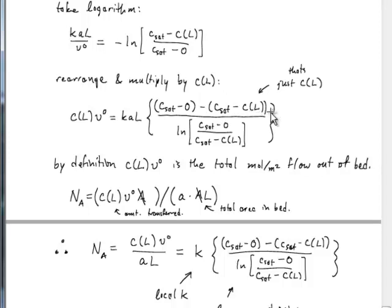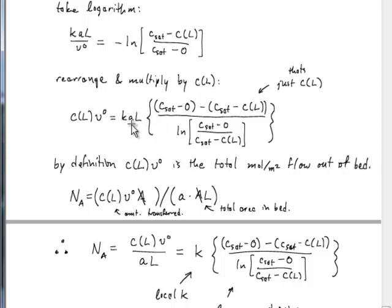It's an interesting way of writing it, because now you see that what we have is the concentration driving force at the beginning of the bed minus the concentration driving force at the end of the bed, over the log of the ratio of those two driving forces at the beginning and end. You recognize this is a log mean concentration driving force over the whole bed from beginning to end. The quantity multiplied here is K·A·L, which involves the packing area per unit volume and our local mass transfer coefficient.